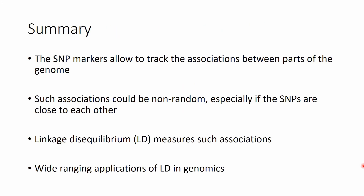In the final summary: we talked about SNP markers that allow tracking associations between parts of the genome, and such associations can be non-random, especially if the SNPs, markers, or parts of the genome are very close to each other. Such non-random association is called linkage disequilibrium, or LD, and there are wide-ranging applications of LD within genomics.